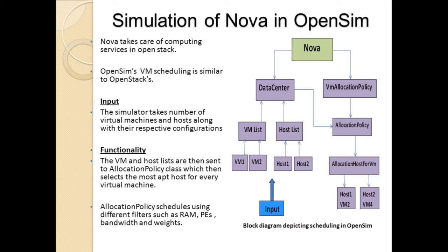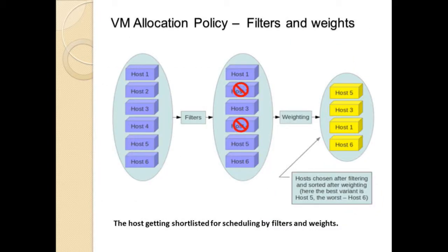A little bit of detail about how we have implemented OpenSim: the simulator has knowledge of the number of hosts and VMs, and it receives a VM allocation list. There is a class in CloudSim called the VM allocation policy, and we modified this to take care of the Nova scheduler, so it simulates Nova scheduling. The VM allocation policy then schedules the VMs on the host the same way that Nova would do it in a real system. This is some more detail on how the VM allocation policy works in terms of how it simulates the filter scheduling policy.